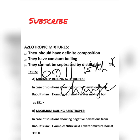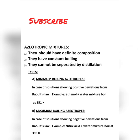Now depending on its deviation from Raoult's law there are two types of azeotropes. We have done non-ideal solutions in the last video and there are two types of deviations — positive deviations and negative deviations with respect to Raoult's law. Depending on those deviations, azeotropic mixtures are of two types: minimum boiling azeotropes and maximum boiling azeotropes.